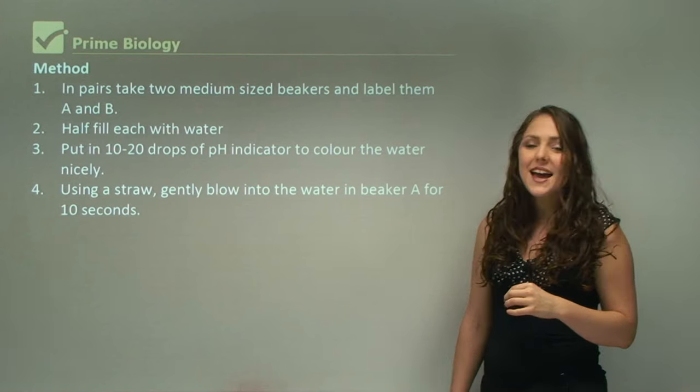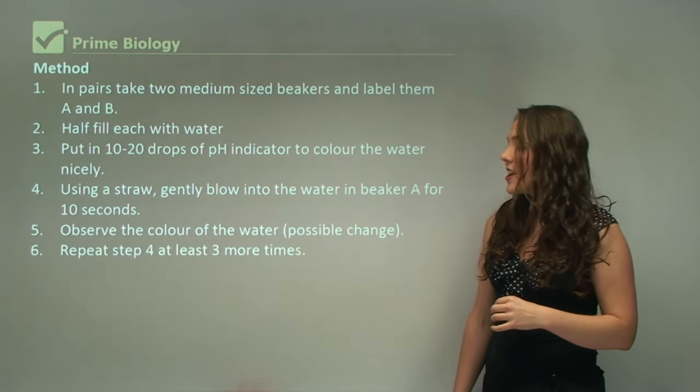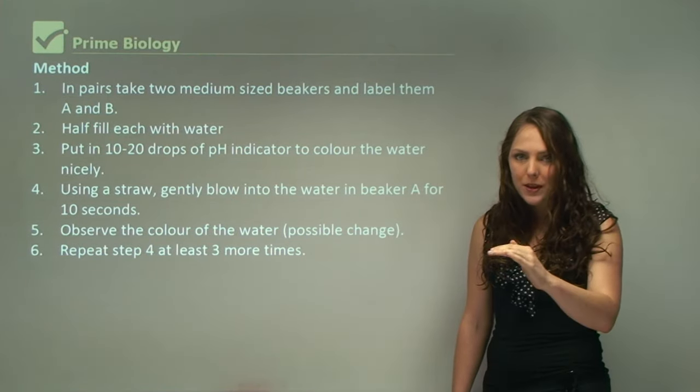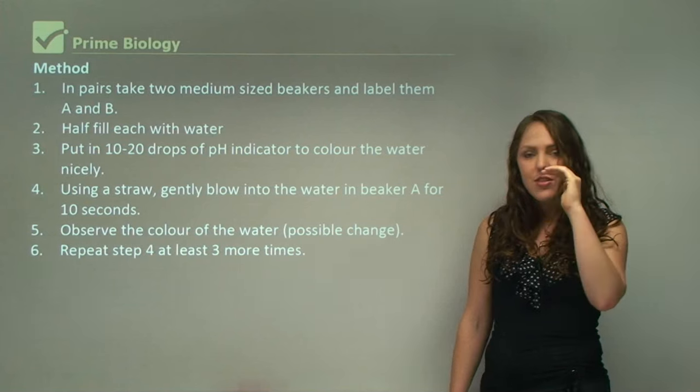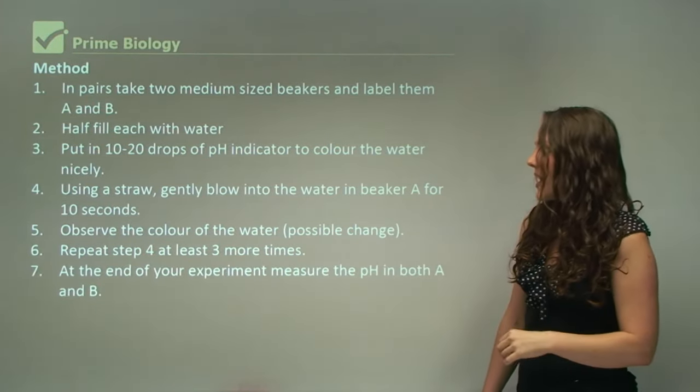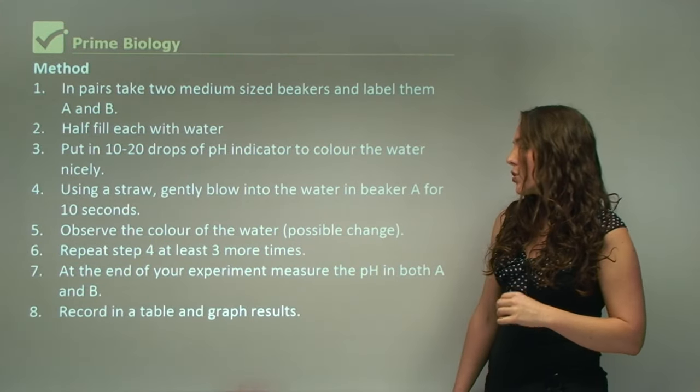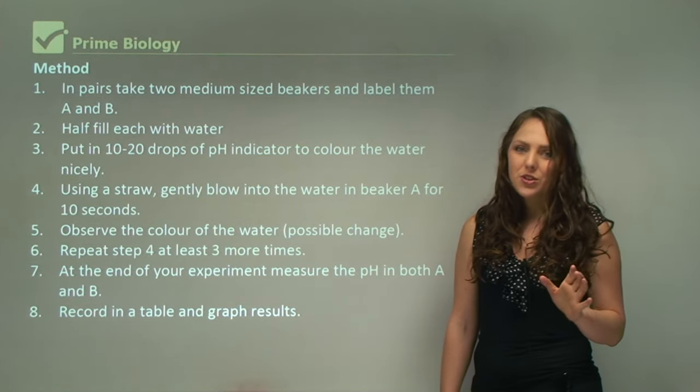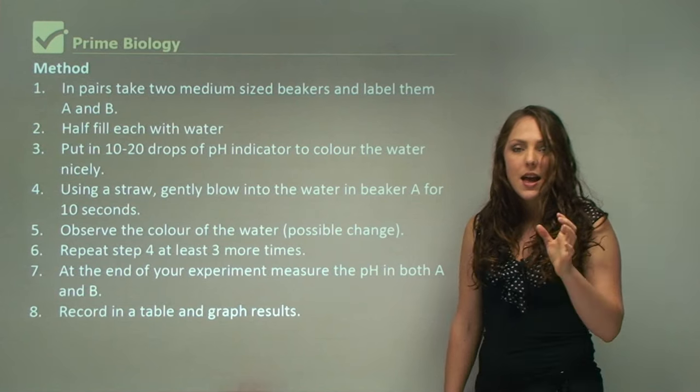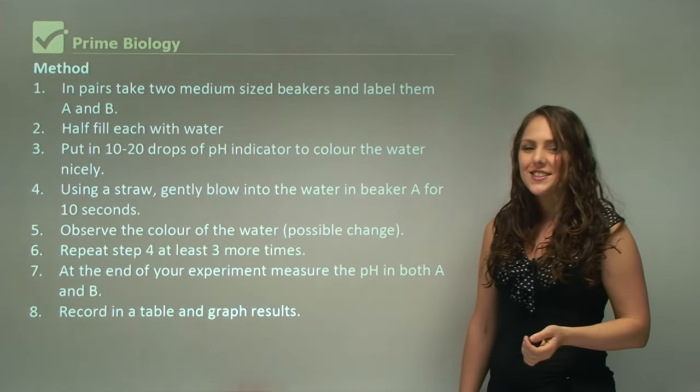Using a straw, gently blow into the water in beaker A for 10 seconds. Observe the color of the water, any possible change, and repeat step four at least three more times. So you're blowing in at 10-second intervals, then you stop, look at the water, record, then another 10-second interval. At the end of your experiment, measure the pH in both A and B. Record in a table and graph results. It's always important to graph your results and put results in a table. If you can, always graph as well. It will give you more marks, especially if you're doing reports in science.